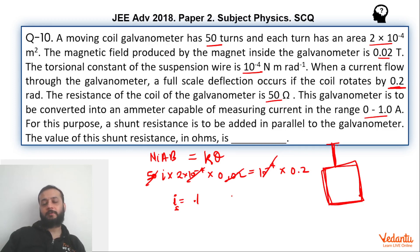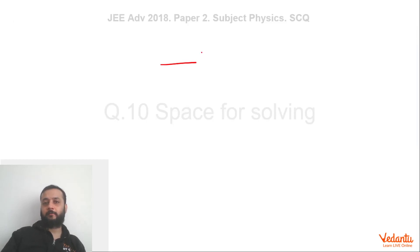Now we have to convert this galvanometer into an ammeter of range 1 ampere. We already know that when a galvanometer is converted into an ammeter, then this shunt needs to be added over here. And there will be a 50 ohm resistor inside the galvanometer.